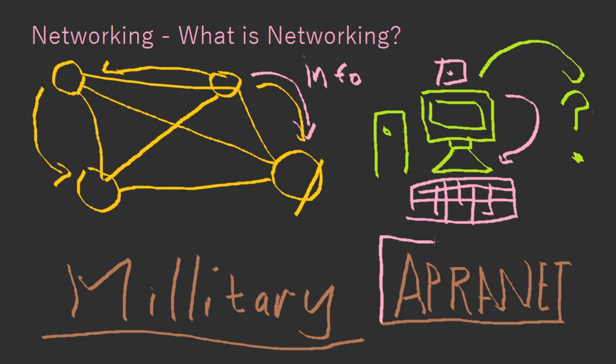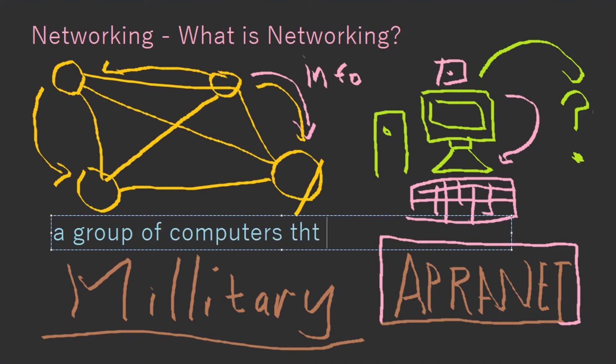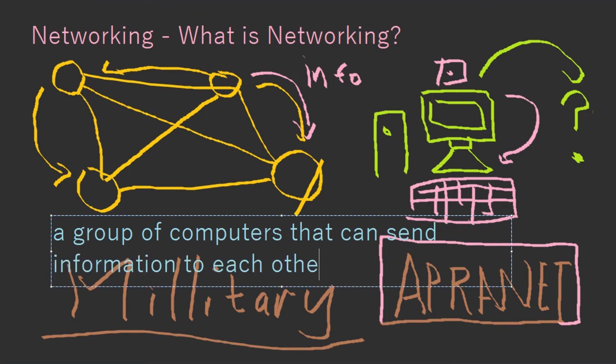So to recap, what a network is, is basically a group of computers that can send information to each other. Now that's not really that good of a definition, but that's the basic definition you have to keep in your mind. That's what networking is. It's just a network of computers sending information and receiving information from different computers.